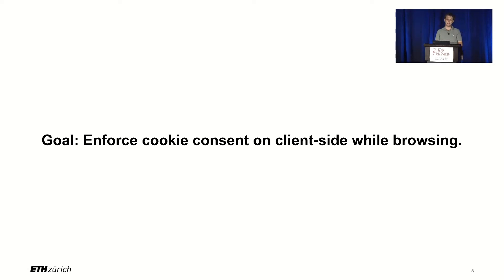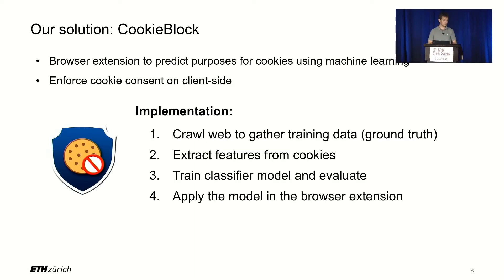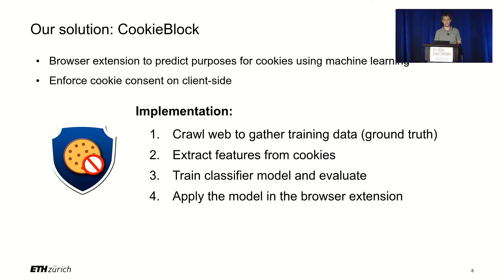All of this evidence shows that a solution is needed that doesn't require users to trust websites. Our main research goal was to find a way to enforce cookie consent directly in the client. Our solution is a browser extension called CookieBlock. The key idea is to look at the actual cookie data, predict its purpose using a machine learning model, and then decide whether to remove the cookie based on the user's consent preferences.